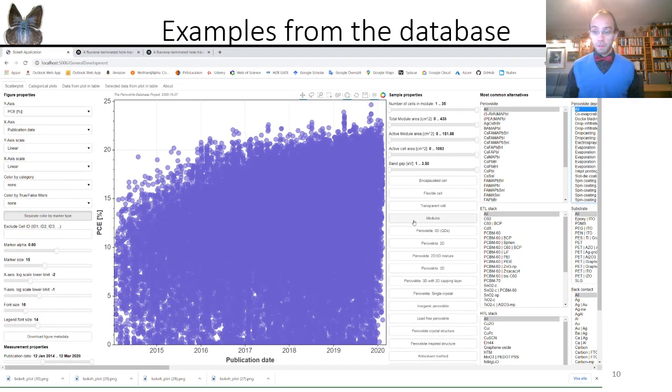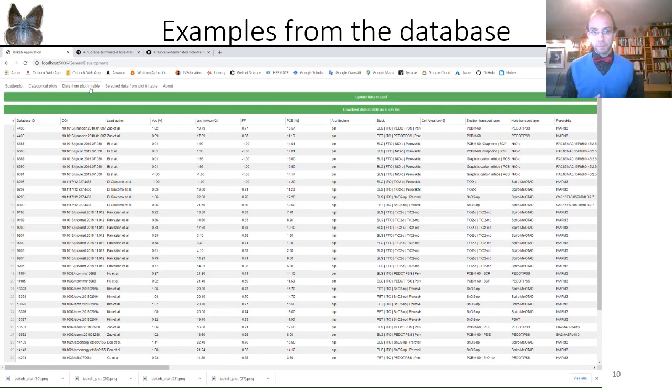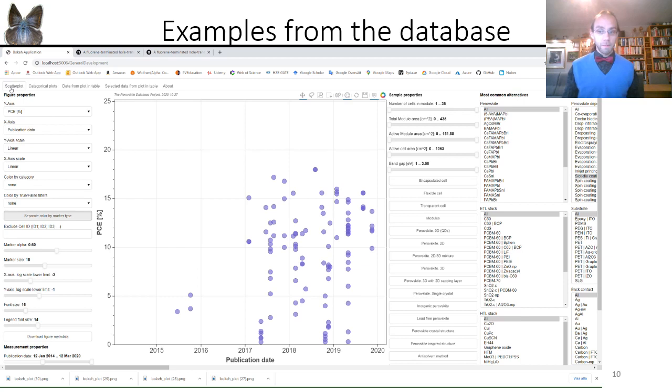Another typical user example is this. Imagine that you're a new PhD student and you are told that your mission in life is slot-die coated perovskites. Then you can go here and with a simple command you could filter out all data for all slot-die coated perovskites available, and you can get this data in tabular form and you can download that data, which gives you a good entry point to the key publications that you should look at further. Once you have this data filtered out, you could start to separate it along a long range of different dimensions related to, for example, materials and properties and synthetic procedures.